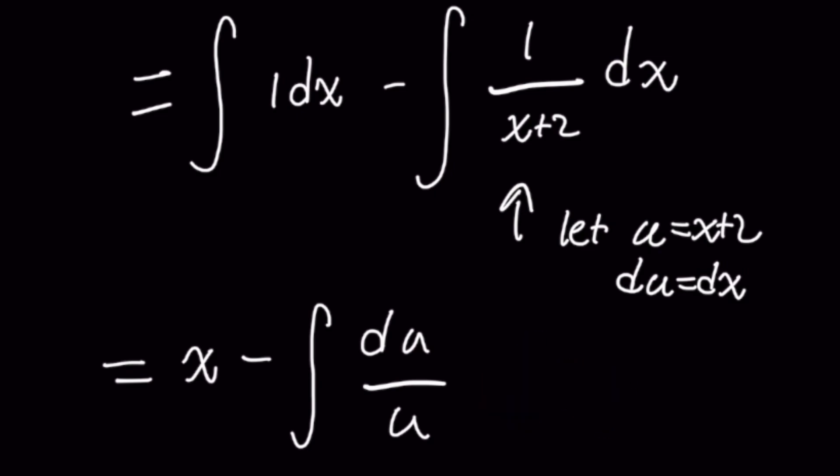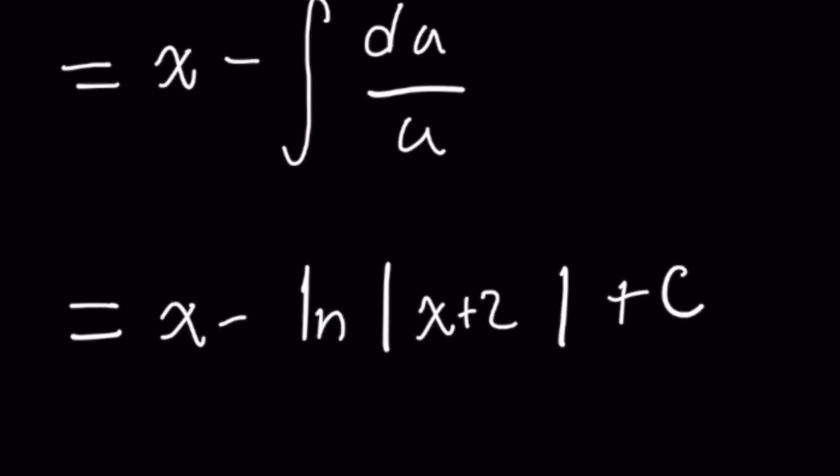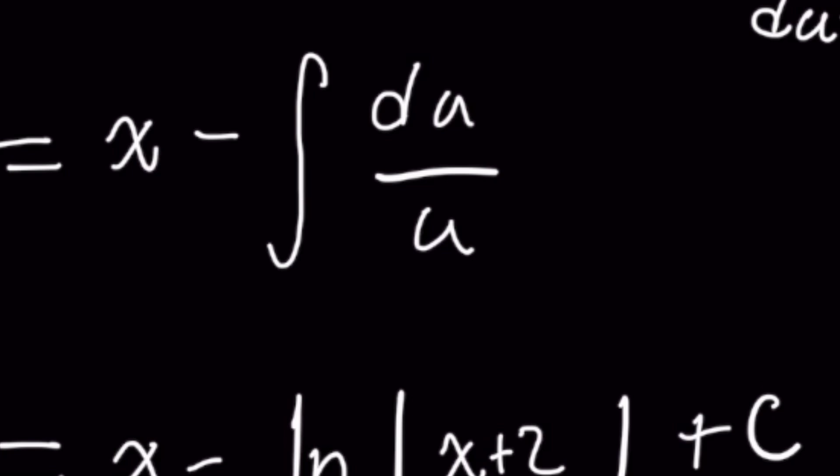And so the left-hand side, which was the integral of 1 dx, is simply x. And then minus the integral of du over u is going to give you the natural log of the absolute value of u. But we have to remember to take care because u is actually x plus 2. So make sure to substitute that back in before you get your final answer.